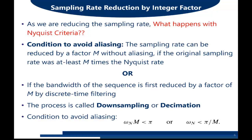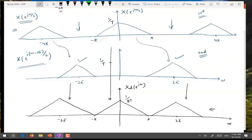But if the sampling rate is exactly equal to the Nyquist rate, we move to the second condition: if the bandwidth of the sequence is first reduced by a factor of M through discrete time filtering, then decimation can proceed without aliasing. We need to reduce the bandwidth because if sampling rate is exactly equal to Nyquist rate we cannot perform decimation without aliasing. Mathematically, this means ω_N · M ≤ π, or ω_N ≤ π/M — if the bandwidth of the signal in the DTFT is less than π/M, we can perform decimation by a factor of M without aliasing.